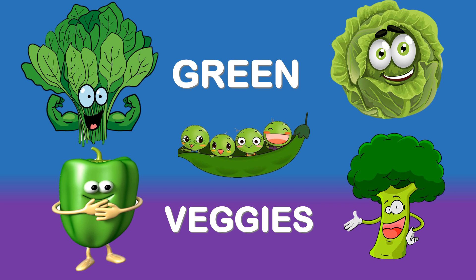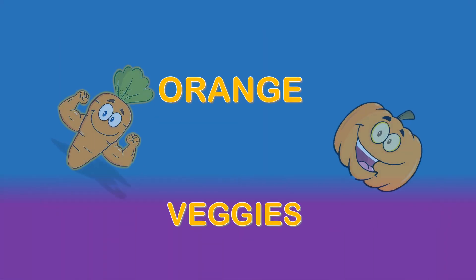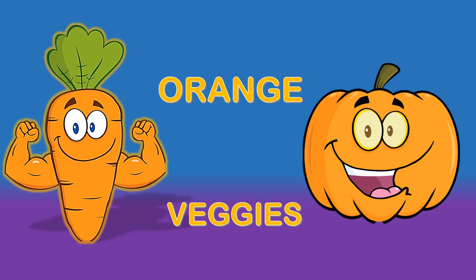So kids, today we will learn about green vegetables. Do you remember which were the green veggies? Spinach, cabbage, broccoli, capsicum or bell pepper, and peas. What are the orange vegetables? Carrot and pumpkin.